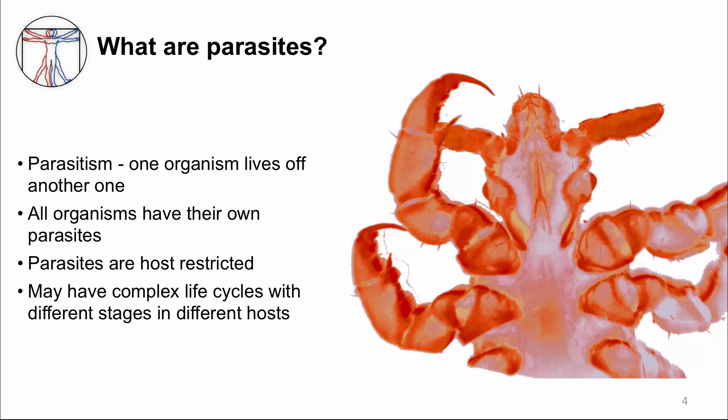Parasites have adapted to hosts with specificity. The image you see on the slide is a head louse, which crawls around in the hair. It's a good illustration of the concept of a specific adaptation to a host. Lice that infect humans have a different shaped hook on their legs compared to lice infecting other animals. That specific hook of the human louse enables it to climb human hair better compared to other animal hair.